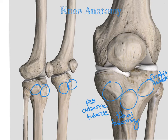The area underneath the patella on the femur is called our patellar groove. That's where the patella can glide along the femur. Our patella moves superior and inferior with flexion and extension of the knee, and it can move about 7 centimeters.